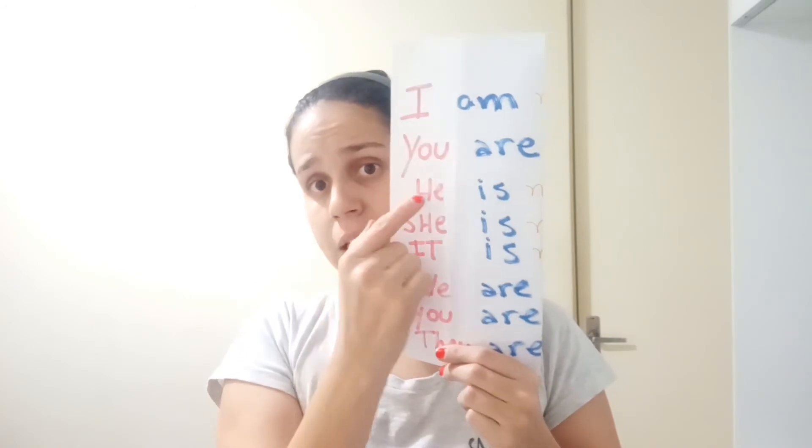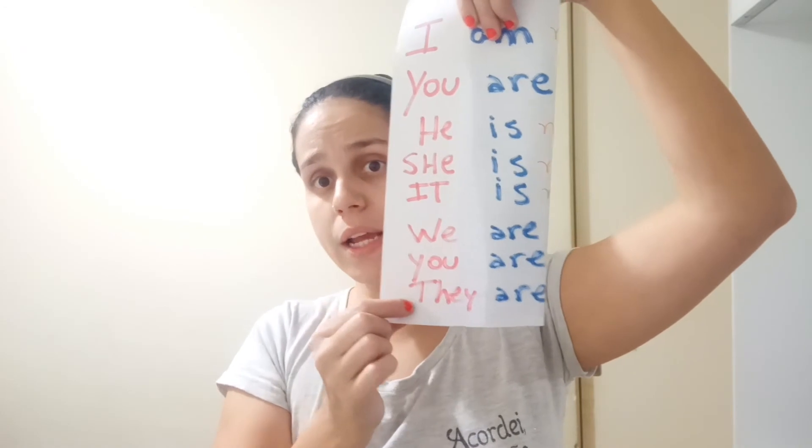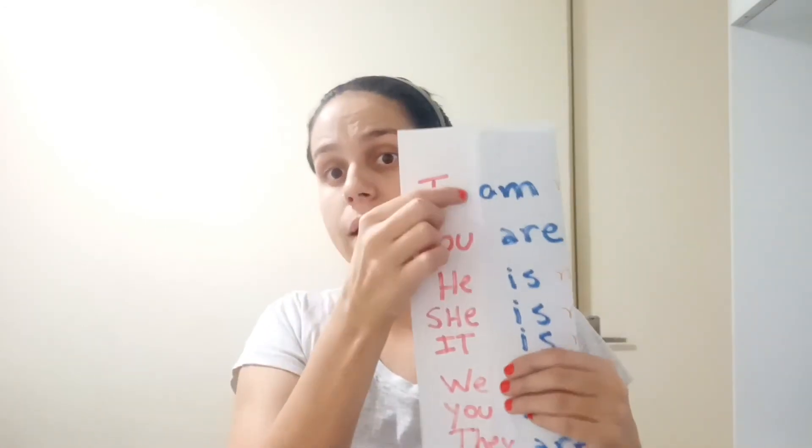And these are the persons. The verb to be: we have I am, you are, he is, she is, it is — so we use 'is' for he, she, it. And we are, you are, they are — these are the plurals. For the plural, we use 'are'. And the verb to be, we use for two meanings: ser and estar.